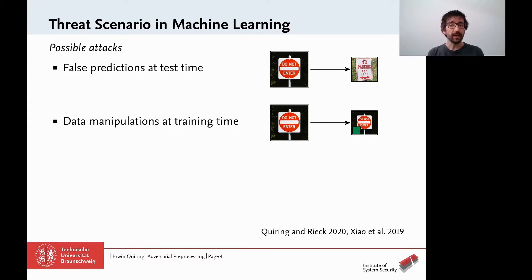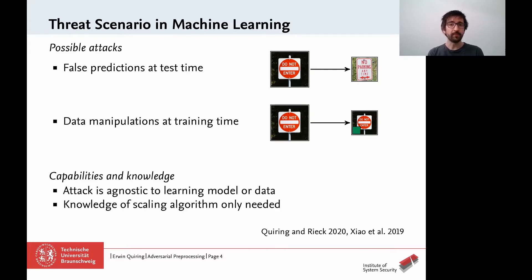Scaling attacks are also relevant outside of machine learning — whenever images are scaled, think about image previews on websites. We need to keep in mind that the threat model of scaling attacks is different from previous attacks like adversarial examples. The attack is independent of the model, learning method, and training data. We just need to know the parameters of a scaling operation. Standard libraries like TensorFlow have only a limited number of scaling options, so these parameters are not hard to find out.